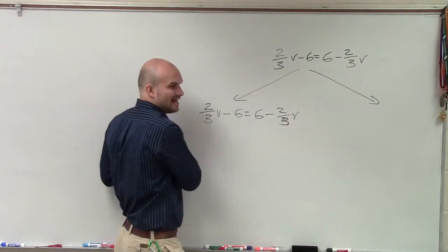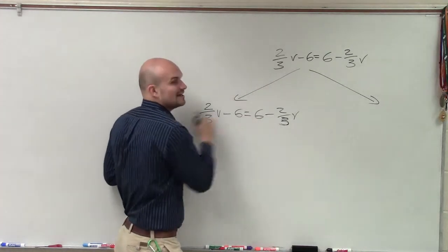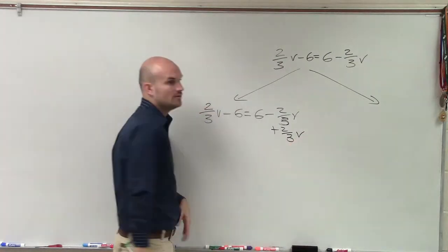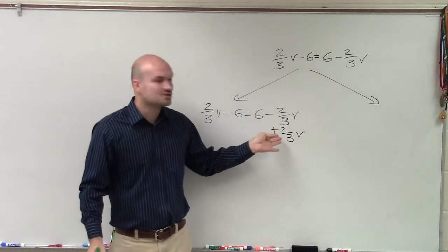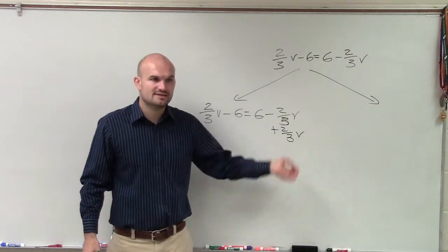So I want to eliminate the negative two-thirds, because negative two-thirds is smaller than two-thirds v. So to eliminate negative two-thirds, I can just add two-thirds v. Because what's negative two-thirds v plus two-thirds v? Zero v. And zero v is zero.